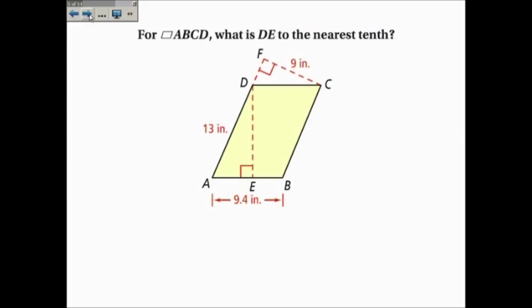Again, we first find the area of the parallelogram using the base and height combination that we know, and then we use the combination where we don't know one of them to find the other one. The combination that I know is 13 inches as my base and the corresponding height is 9 inches. So the area is equal to the base times the height, so it's 13 inches times 9 inches, and 13 times 9 is 117. So the area is 117 inches squared.